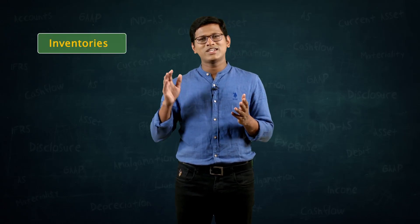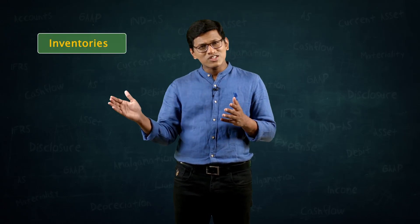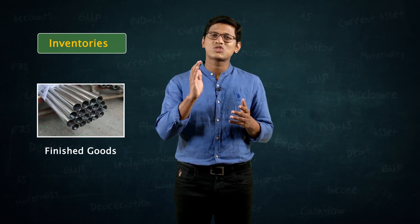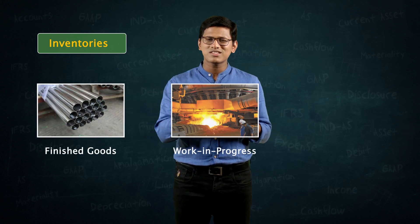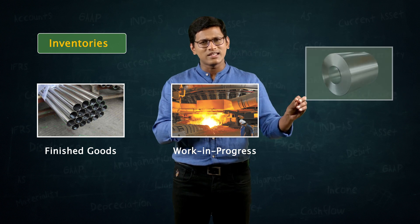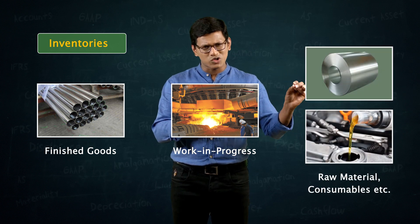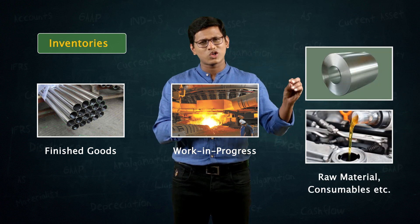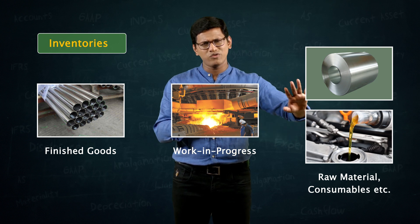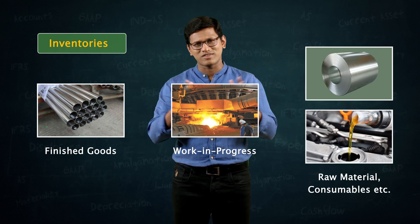Inventory broadly can be divided into three types. The first one is finished goods, the second one is work in progress, the third one is raw materials, then spares or loose tools, consumables, etc. We will talk about each of these categories.